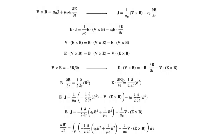It's now time to make all the substitutions. Our original expression E dot J becomes 1 over mu naught times E dot curl of B, with the substituted expression giving: minus one half partial by partial T of B squared minus del dot (E cross B), minus epsilon naught times one half partial by partial T of E squared. These two time-derivative terms look very similar, so collecting them, you get E dot J equal to minus one half partial by partial T of (epsilon naught E squared plus 1 over mu naught B squared) minus 1 over mu naught times del dot (E cross B).